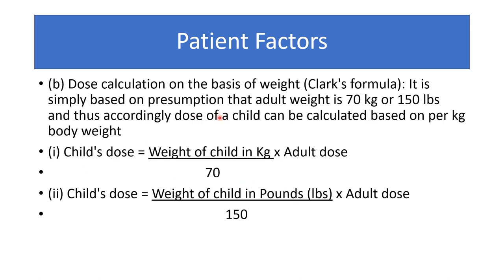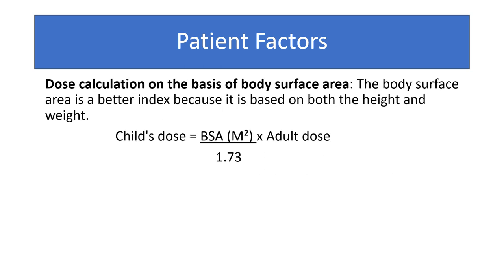Dose calculation based on weight assumes adult weight is 70 kg or 150 lbs. Child dose = (weight in kg / 70) × adult dose, or child dose = (weight in pounds / 150) × adult dose. Surface area method is the better index because it is based on both weight and height: dose = (body surface area in m² / 1.73) × adult dose.